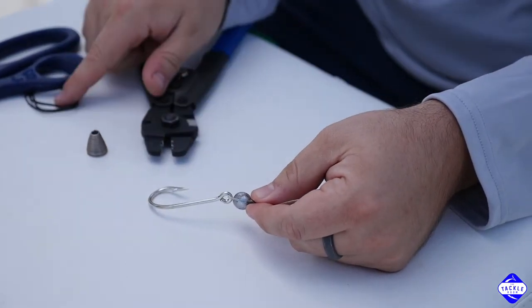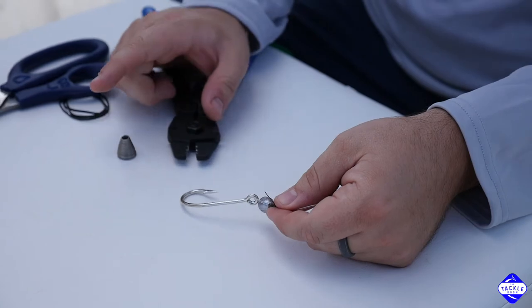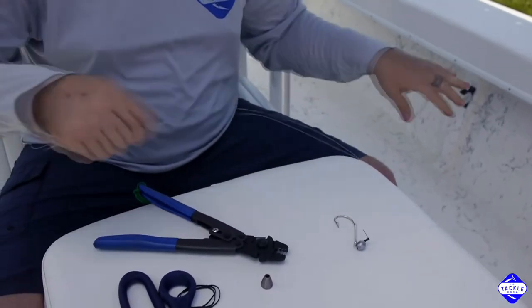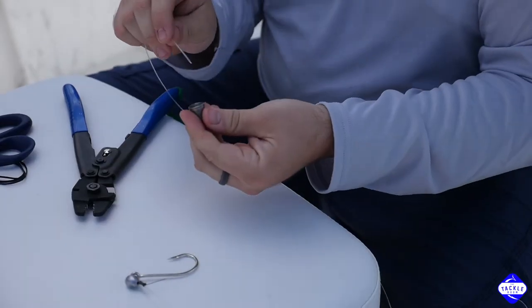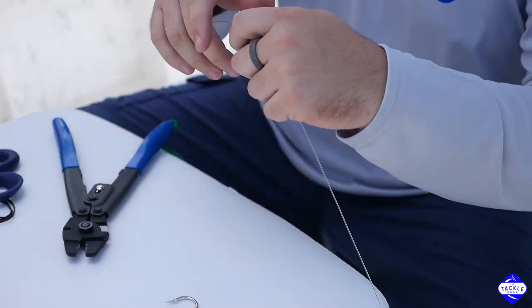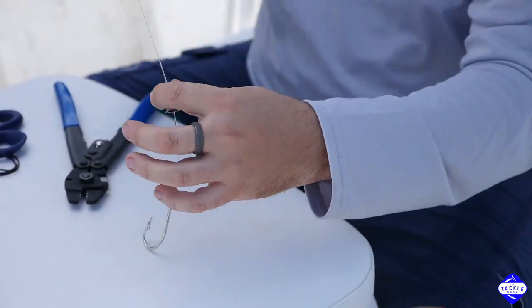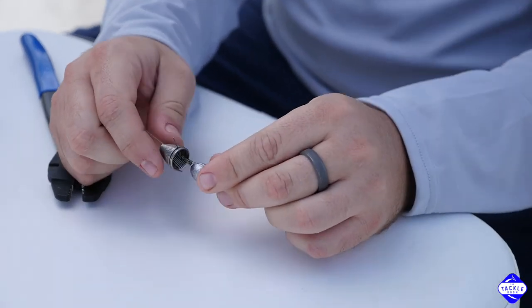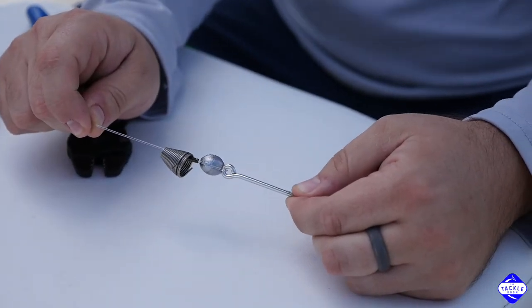Now, depending on whether you're using rubber bands or stainless spring, next will come your spring if that's your rig of choice. Take that, slide that down. You can twist that on until you're ready to rig it. And that's how you make a simple mono rig.